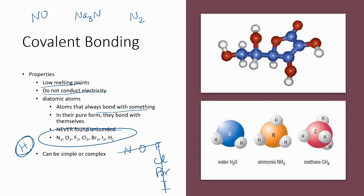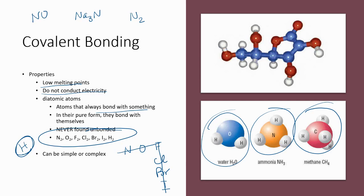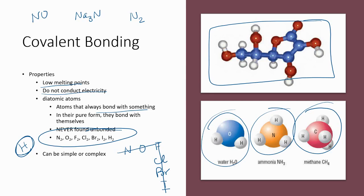Covalent molecules can be rather simple — just H₂O, NH₃, or CH₄. But they can also be very, very complex. They can form fats, DNA, proteins, and things where these structures are very large and have lots and lots of atoms involved. That makes covalent molecules very interesting because they can take a lot of different forms and have a lot of different purposes.